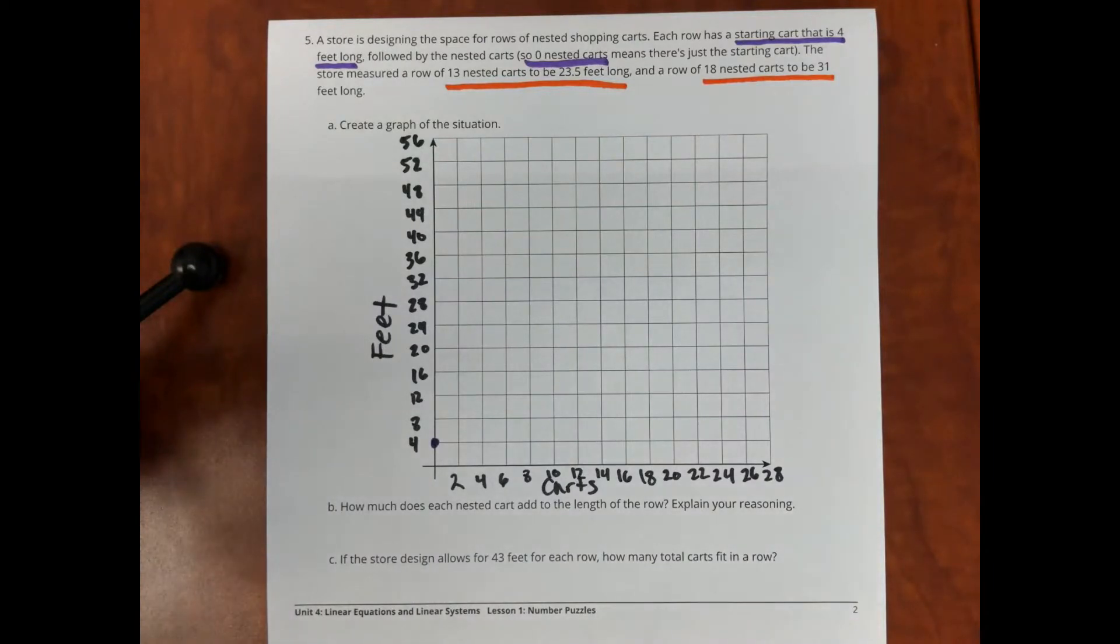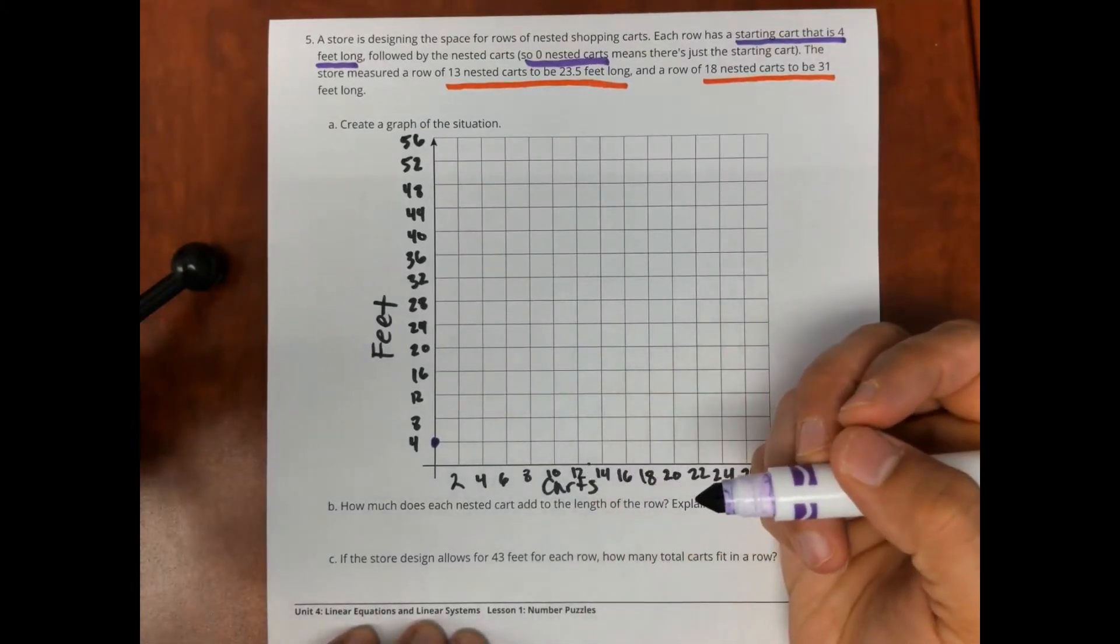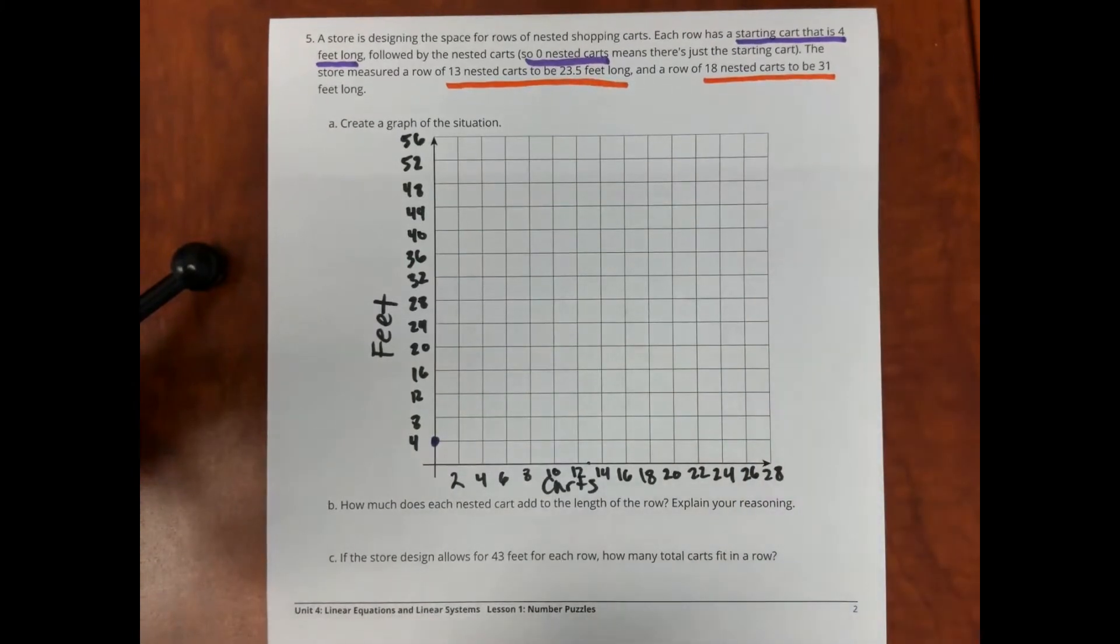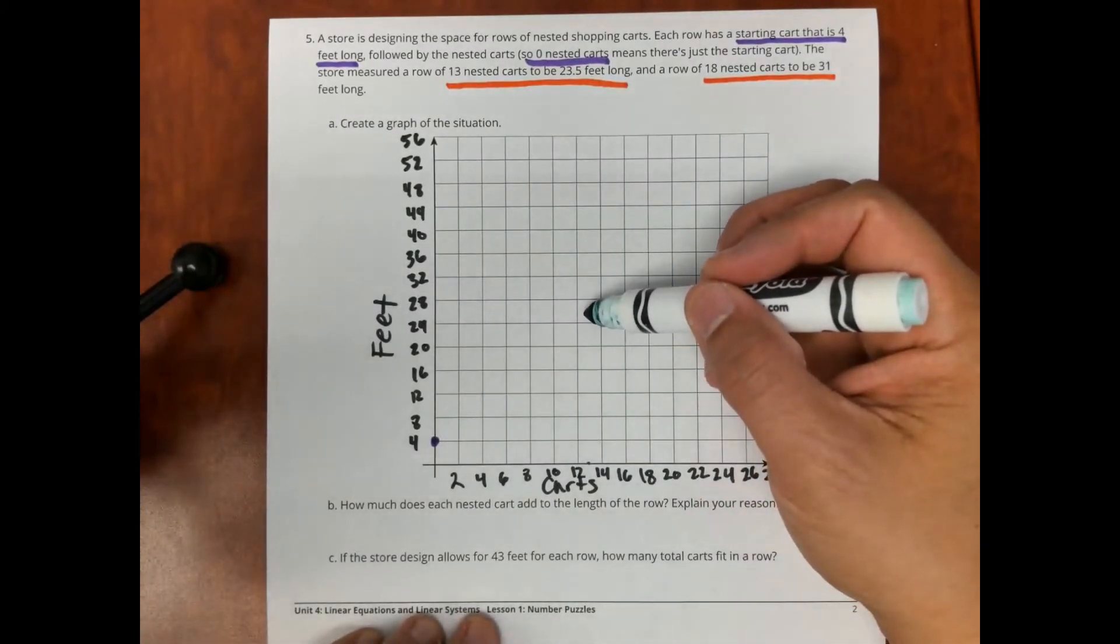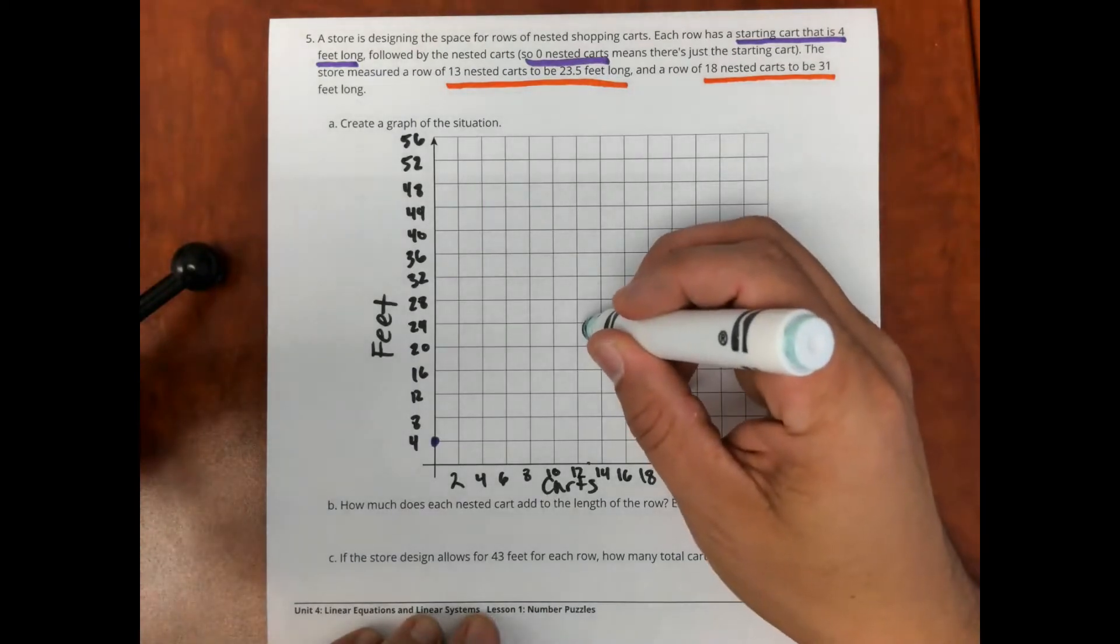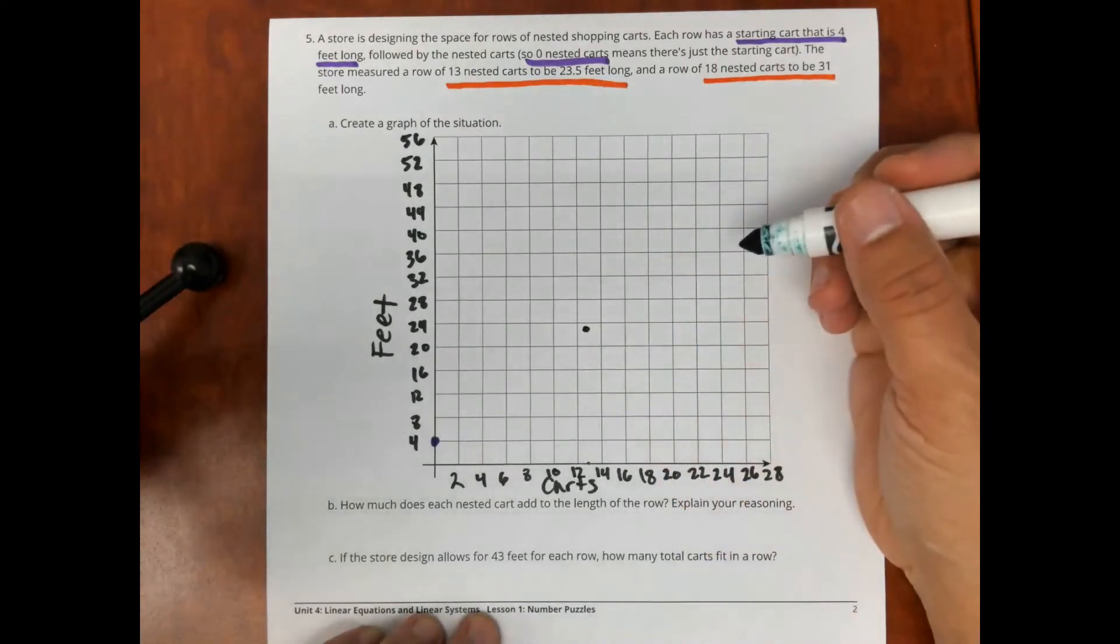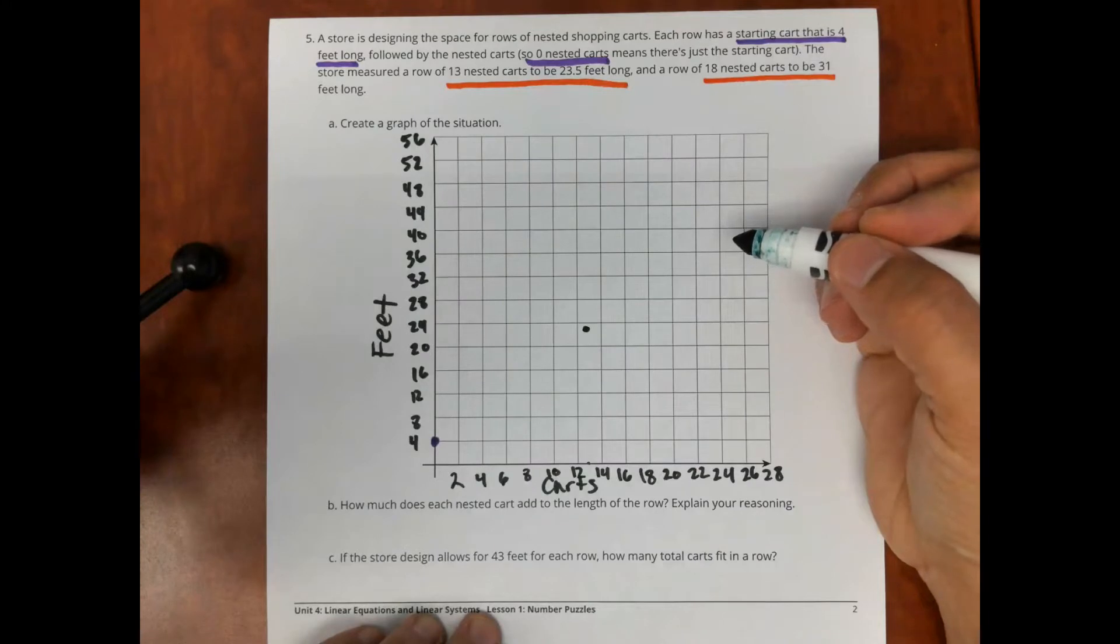The next point that I'm going to put is 13 nested carts. 13 is right in the middle of 12 and 14. I'm going to go all the way up to 23 and a half. So, that's somewhere right here in the middle between 20 and 24, probably closer to the 24 right there. And it's okay if when you're doing your graph, it does not fit exactly on the axis. That's okay.